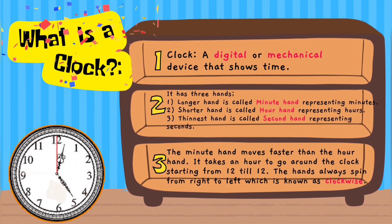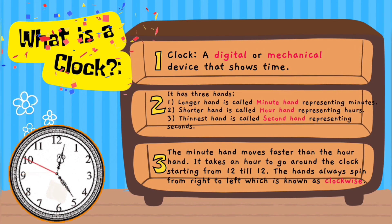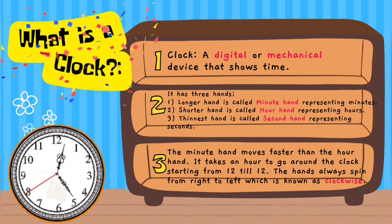It has three hands. Longer hand, the minute hand, representing minutes. Shorter hand, the hour hand, representing hours. Thinnest hand is the seconds hand, representing seconds.